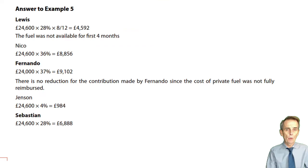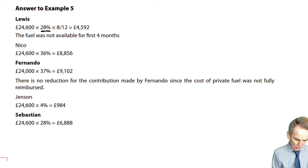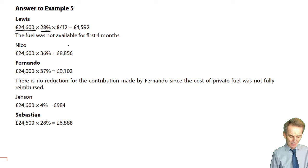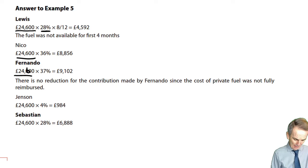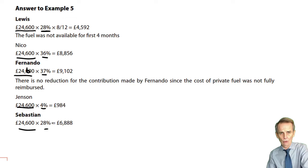Hopefully a quick and easy exercise. All we had to do for each taxpayer was pick up the percentage computed for the car benefit and apply it again to the set fixed figure of £24,600 for the fuel benefit. For every one — Lewis, Nico, Fernando, Jensen, or Sebastian — it's £24,600 multiplied by the relevant percentage already established.